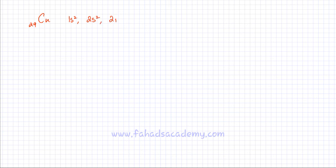The very same idea applies to copper as well. Copper has a total of 29 electrons, so we are going to write the electronic configuration of copper. It is going to be 1s2, 2s2, 2p6, 3s2, 3p6. After which the 4s subshell fills, and then you have 3d9.